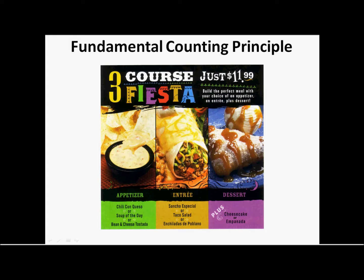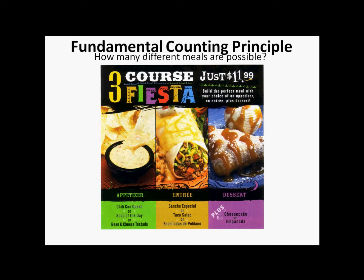Now, on this problem, we've got this menu here, we've got this advertisement, you've got a three-course fiesta for $11.99, and you pick an appetizer, an entree, and a dessert. So we want to figure out how many different meals are possible. Well, let's look at our appetizers. How many appetizers do we have? We've got the chili con queso, the soup of the day, and the bean and cheese tostada. That's three choices.